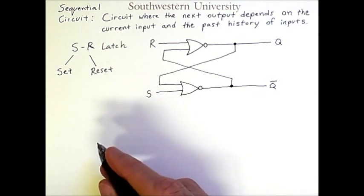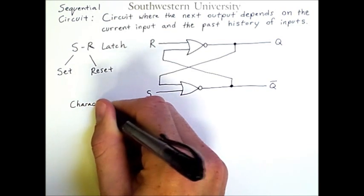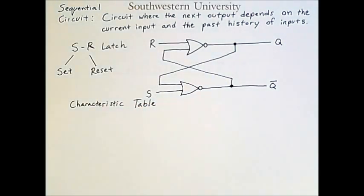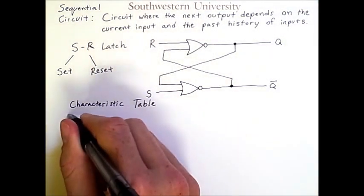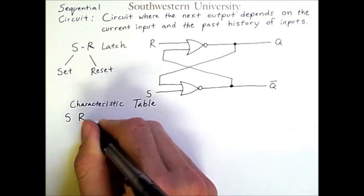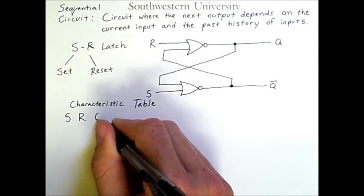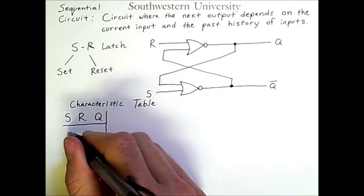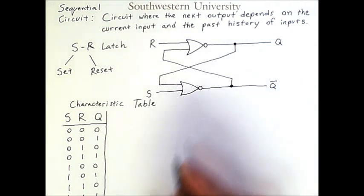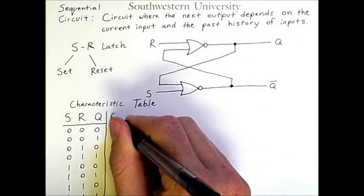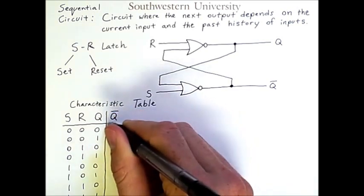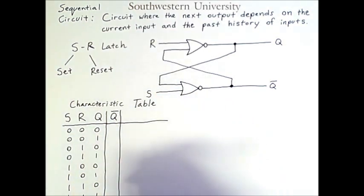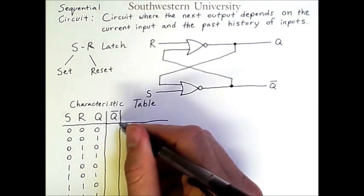Now we can create something called a characteristic table, which is sort of like a truth table, but accounts for the sequential nature of the circuit. Now in any given time we have to worry about the inputs S and R, but we're also going to look at the value of Q. So we're going to treat these values as the inputs and consider all possibilities. So let me list those out. These are all possible inputs to this circuit. We'll also need to know the value of NOT Q. But this, although it will be used to determine the behavior of the circuit, is not going to be treated as its own separate input, because it should always have a value opposite of Q. So I'll simply fill out this as the negation of Q.